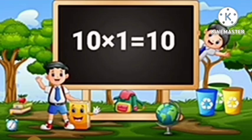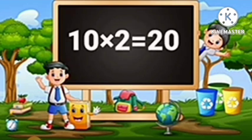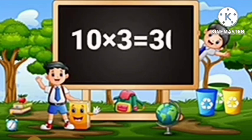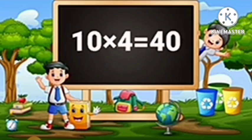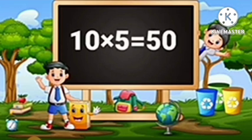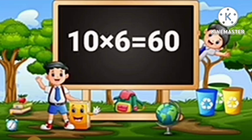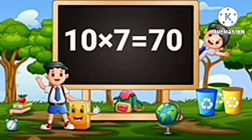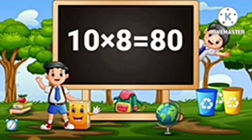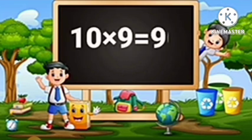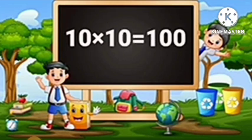Table of Ten. Ten-One's are Ten. Ten-Two's are Twenty. Ten-Three's are Thirty. Ten-Four's are Forty. Ten-Five's are Fifty. Ten-Six's are Sixty. Ten-Seven's are Seventy. Ten-Eight's are Eighty. Ten-Nine's are Ninety. Ten-Ten's are One Hundred.